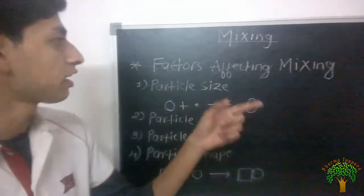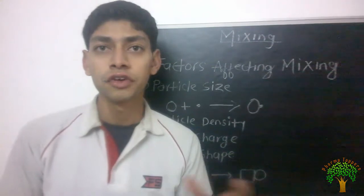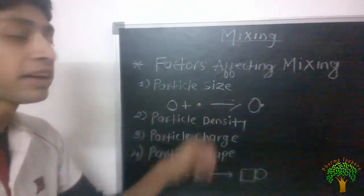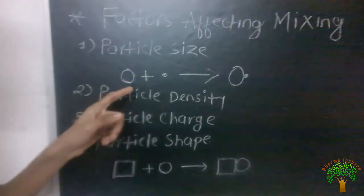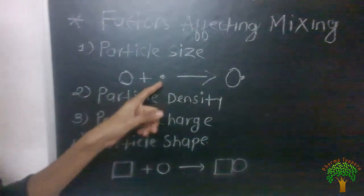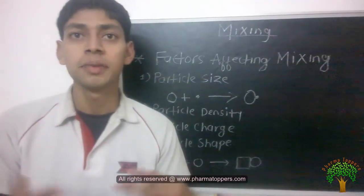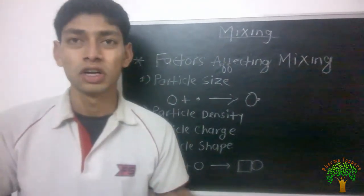So there are various factors affecting the mixing which prevent this kind of homogeneous mixing. Now first one is the particle size. In case of particle size, some particles are very bigger in size and some are very smaller in size. And due to that non-uniformity between these particles, it leads to negative mixing, means improper mixing.